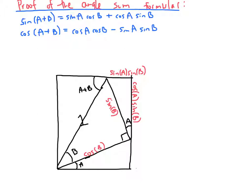Please pause the video and take a moment to fill in the side lengths of this right triangle and this right triangle. You should be getting sine A cosine B, cosine A cosine B, sine of A plus B, and cosine of A plus B.